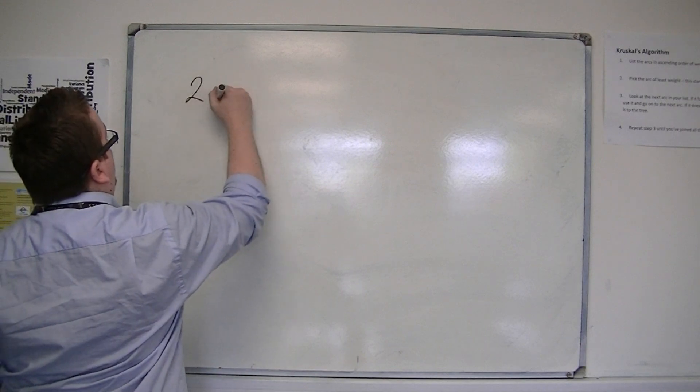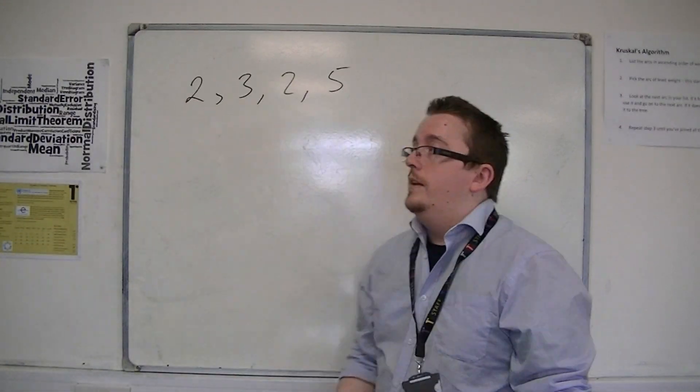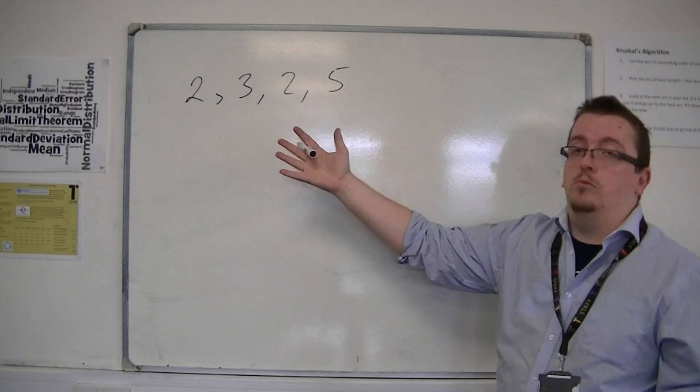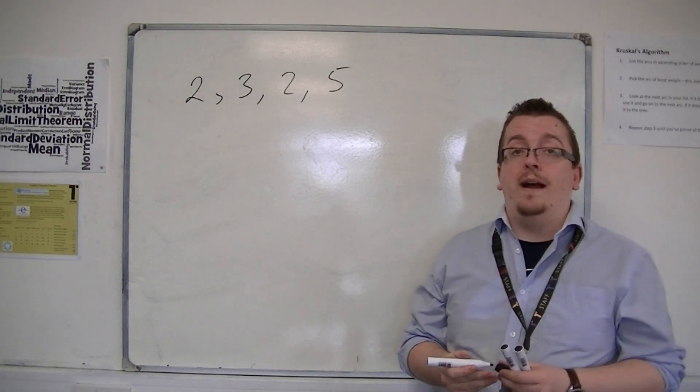So if you've got a series of numbers like this, just four numbers, then the mode is two, because two comes up the most. So that could be considered as another possible average.